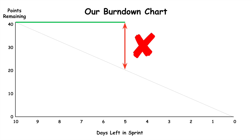Here's another example. Again, 40 points, two weeks. At the end of the first week, nothing has been accepted by the product owner, so no story points have been completed. We'll often see this if a team has developers who write code and throw it over the wall to testers on their team. The developers are busy at the start, but nothing is getting done because the testers are waiting for the developers to finish rather than pairing on test-driven development. No matter how they got here, a team that frequently finds itself in this position will struggle to deliver reliably.